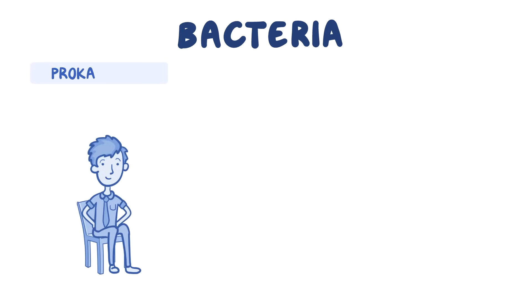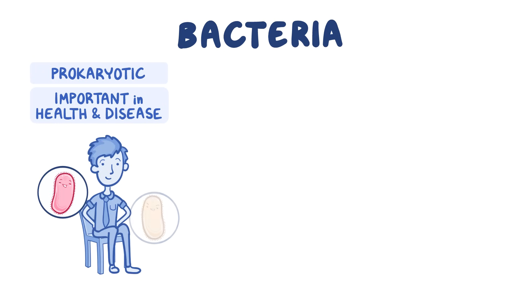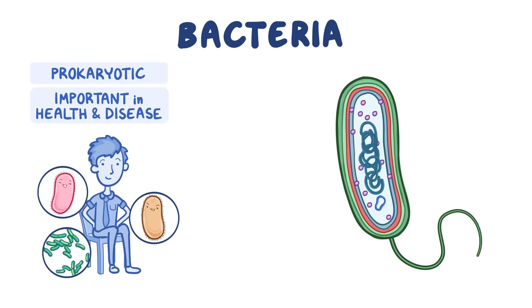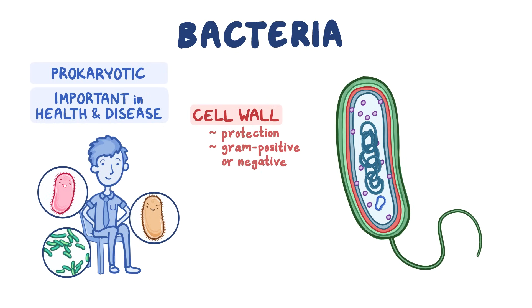As a quick recap: bacteria are prokaryotic cells that play an important role in human disease and health, and can be found almost anywhere in the environment. Bacterial cells are often surrounded by several layers collectively called the cell envelope. They have a cell wall which protects the bacteria, determines whether they are gram-positive or gram-negative, and helps maintain their shape. Some bacteria also have an extra layer on top of the cell wall called a capsule, which is a major virulence factor.